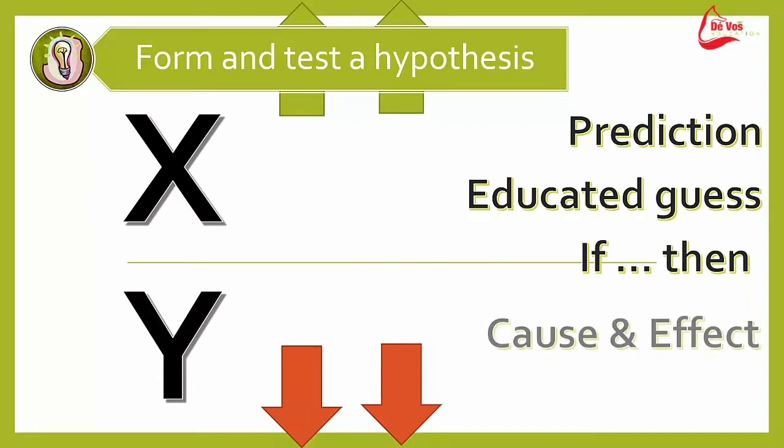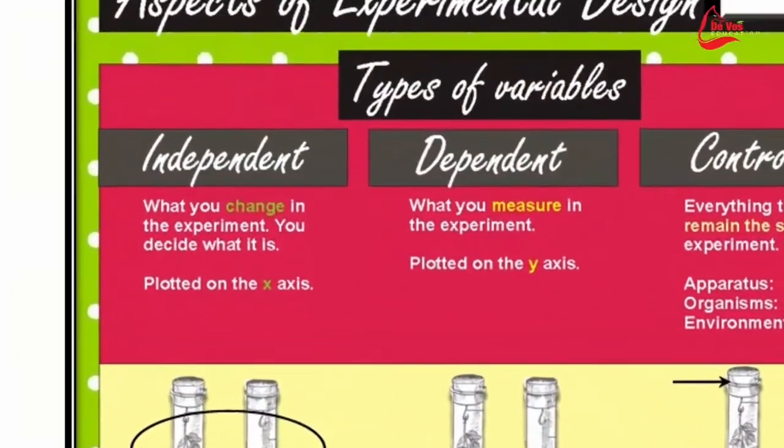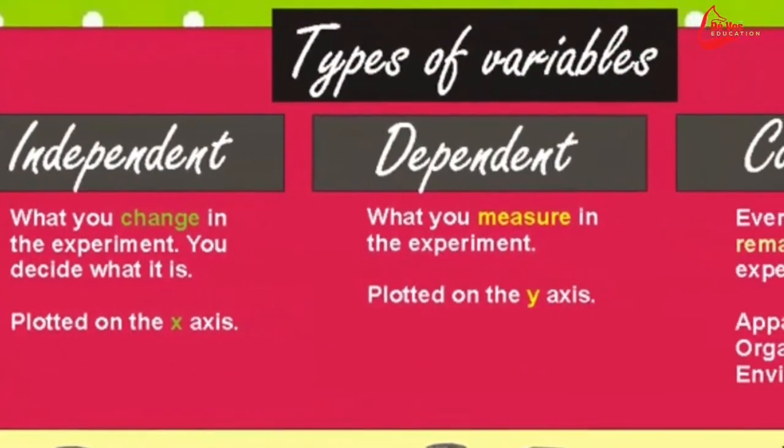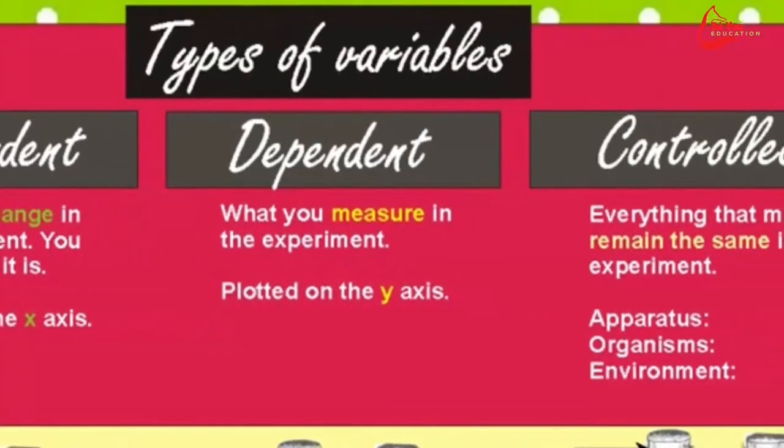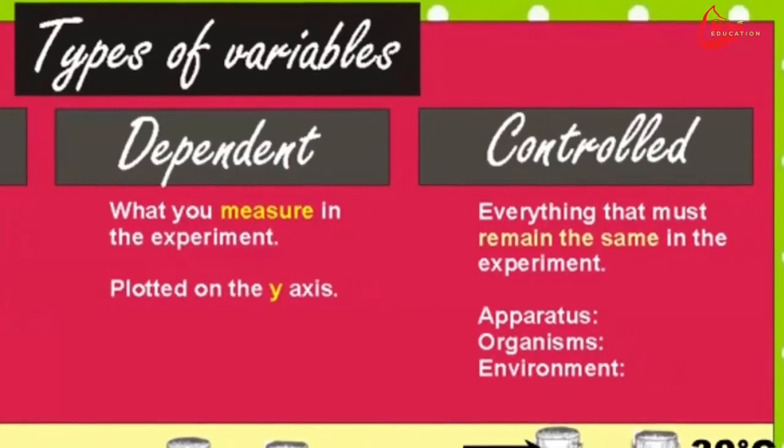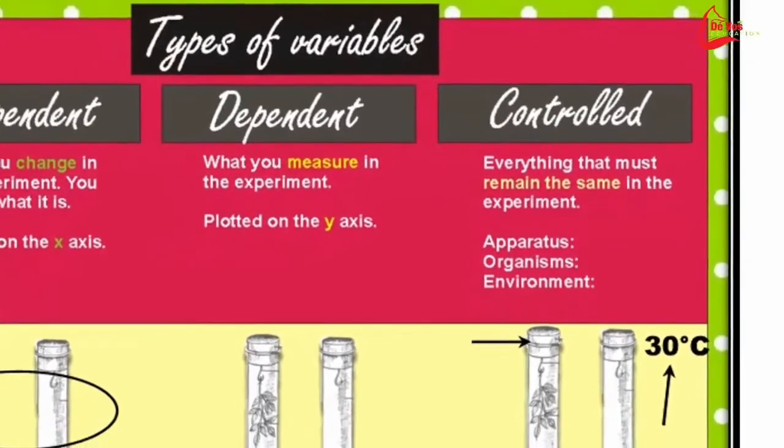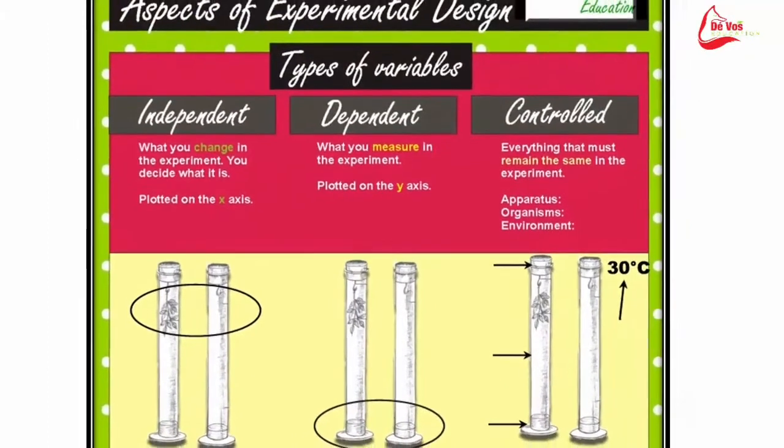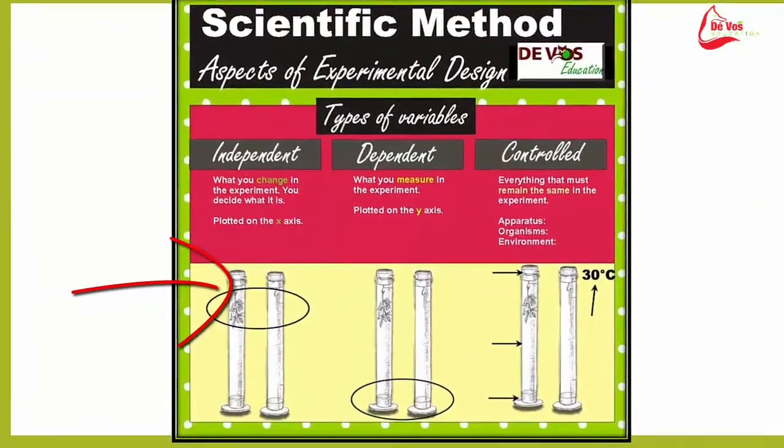To recap, we have three types of variables. The first is your independent variable. This would be what you change in the experiment. You decide what it is and it will be plotted on the X-axis. Next, we have the dependent variable. This is what you measure in your experiment and this will be plotted on the Y-axis. And lastly, we have the controlled or fixed variable. This is everything that must be the same in the experiment, which could include your apparatus, your organism, and the environment it is found in.